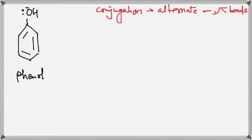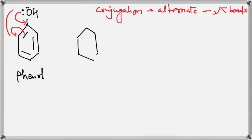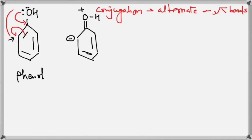Oxygen has two lone pairs here. This lone pair will come here to form a bond, and that will cause this bond to break. We have our first resonance structure where we have a double bond with oxygen and an H atom. Because the lone pairs came down to form a bond, oxygen gets a plus charge and the carbon atom here gets a minus charge, and we draw the rest of the molecule as it is.